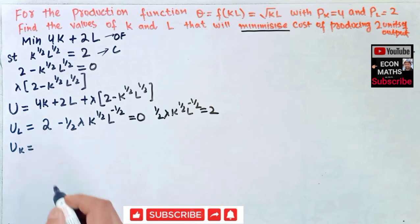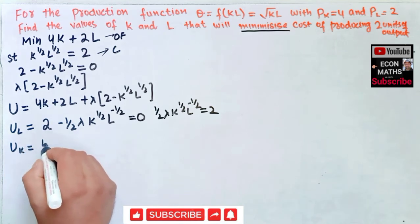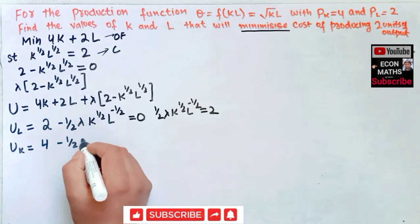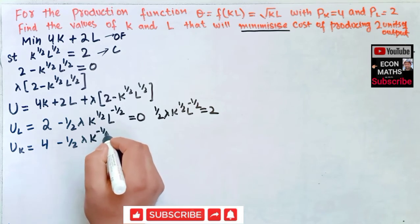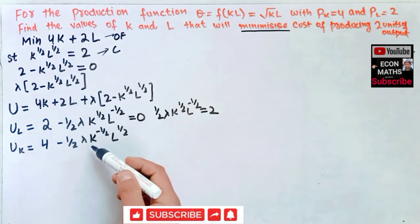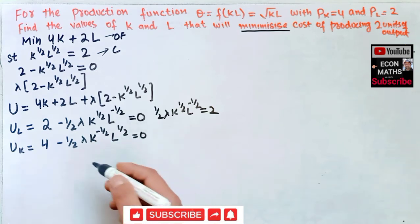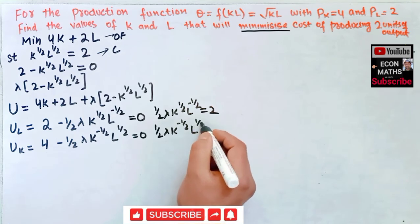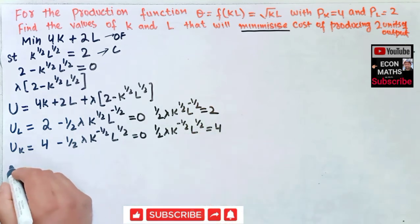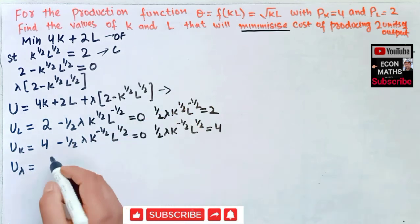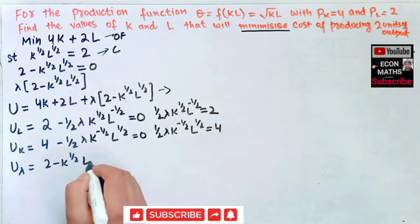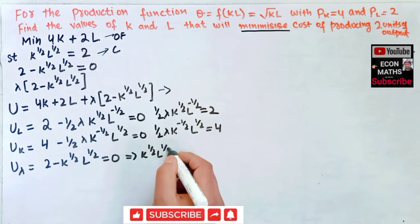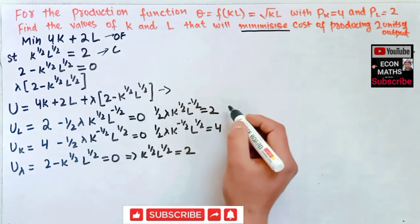Partially differentiating with respect to K: the derivative of 4K is 4, and the constraint term gives −(1/2)λ · K^(−1/2) · L^(1/2). Setting equal to zero yields: (1/2)λ · K^(−1/2) · L^(1/2) = 4. This is equation two. Partially differentiating with respect to λ gives: 2 − K^(1/2) · L^(1/2) = 0, or K^(1/2) · L^(1/2) = 2. This is equation three.